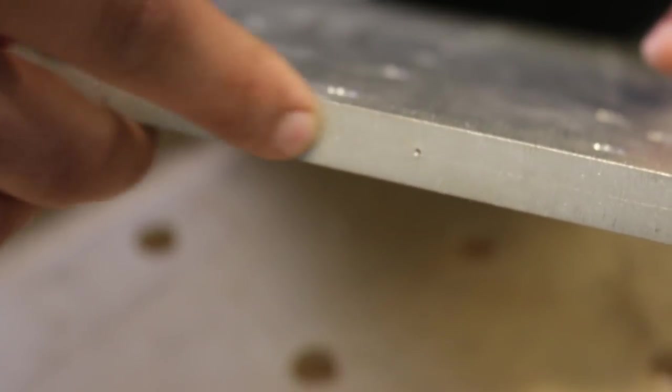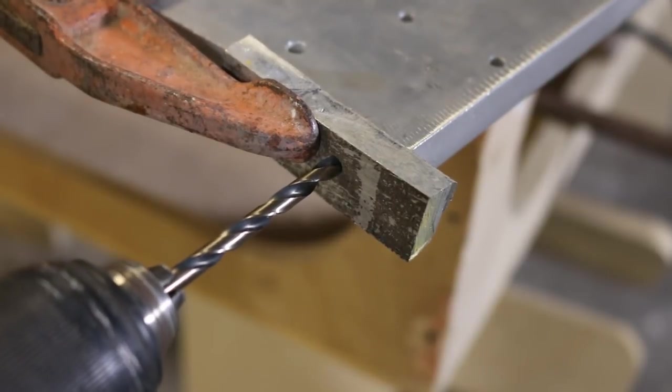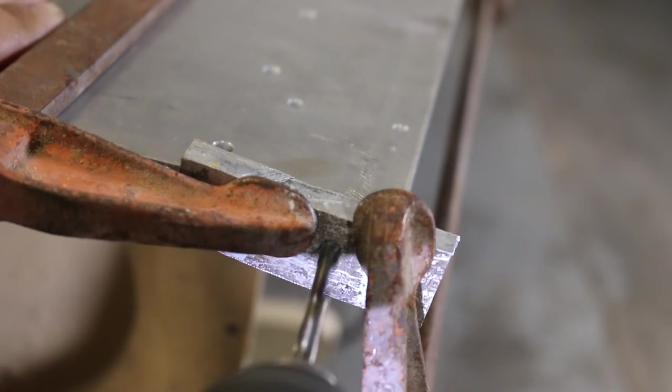Now we just need to figure out how to get this in the drill press so we can drill it on end. So the best I could do here was create a little guide block out of a piece of scrap aluminum and that will guide my hand drill hopefully pretty square. Turns out the base plate was too big to fit in my drill press.